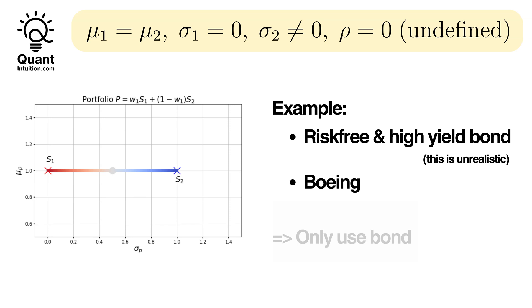So, what's the optimal weighting here? Given the constant expected value, our goal is to minimize variance, suggesting an all-in investment in the theoretical risk-free bond S1. However, remember, such a scenario is more illustrative than practical.